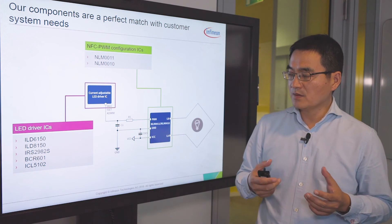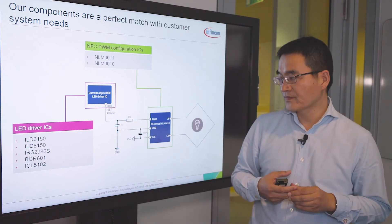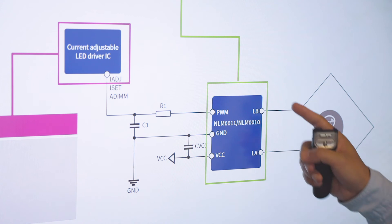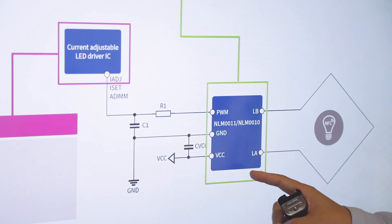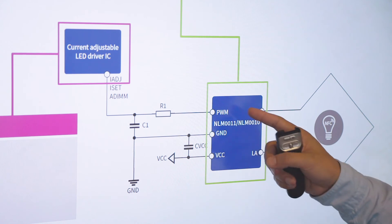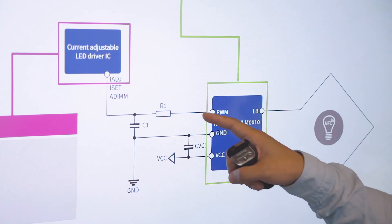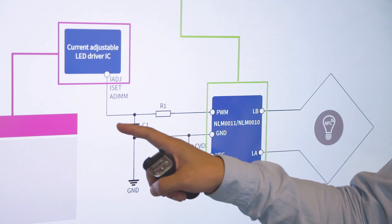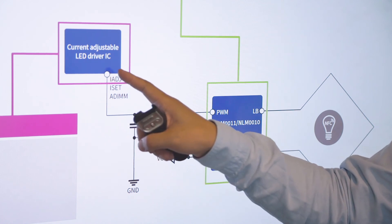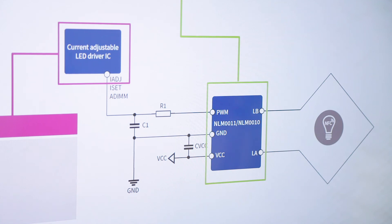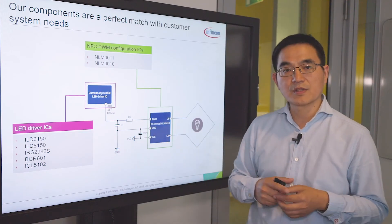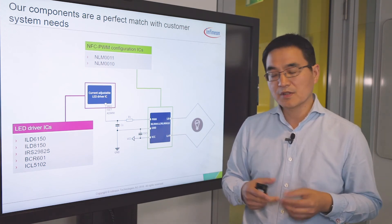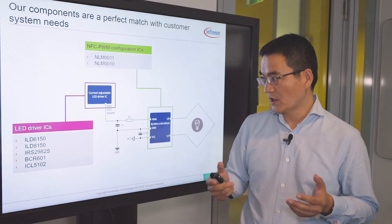We now offer an NFC PWM concept which can solve this problem. The system is very simple and consists of four parts. Part one is the antenna. The second part is the NFC IC, which can be wirelessly configured. It generates a PWM signal, which is converted to a voltage after passing through a filter. This voltage is used to control the LED driver, which controls the power stage. This concept is very simple, compatible with existing analog designs, and requires no firmware development efforts — making it the most cost-effective solution in the market for this kind of application.